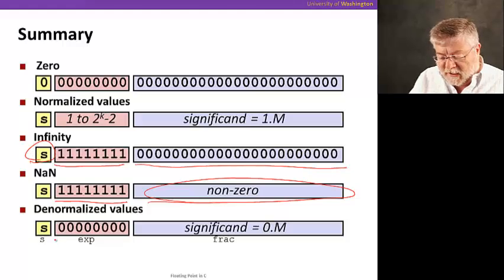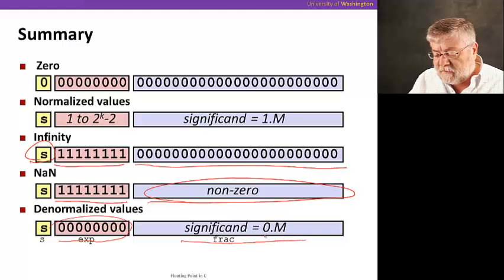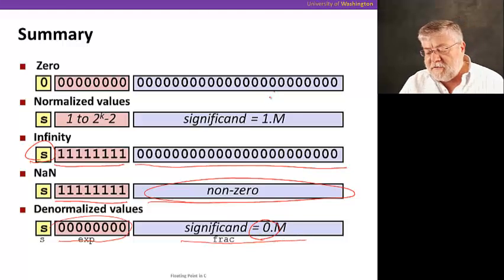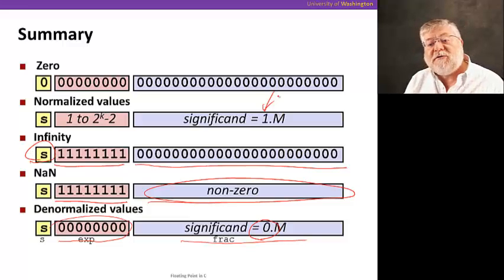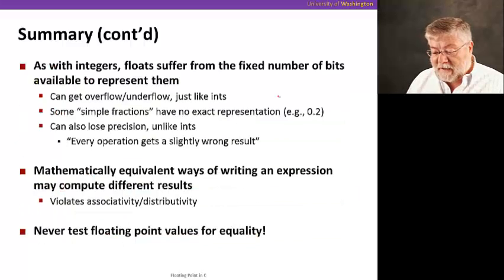And finally, we have denormalized values, where the exponent is zero, but we treat the significant a little differently. And you'll notice that in this case, we'll put a zero in front of it rather than our typical one for normalized values. And this is used to represent value, to more densely represent the values near zero. Okay? We're not gonna talk about denormalized values here, but they are treated in more detail in the recommended text by Bryan and O'Halloran, if you want to learn more about that.